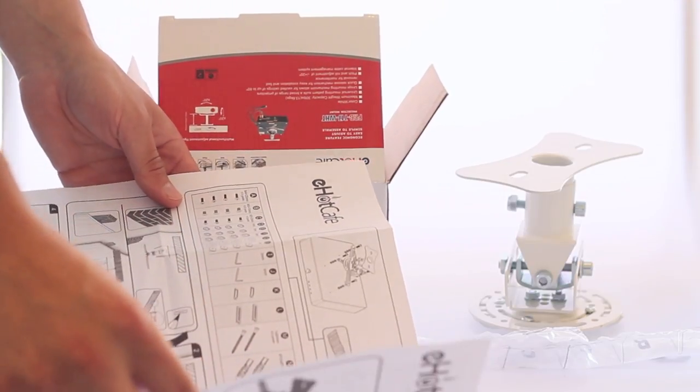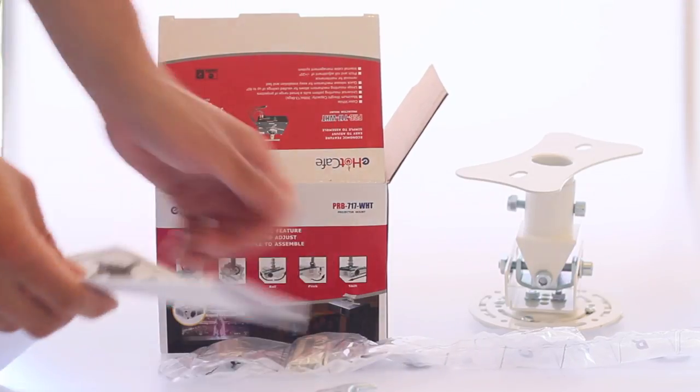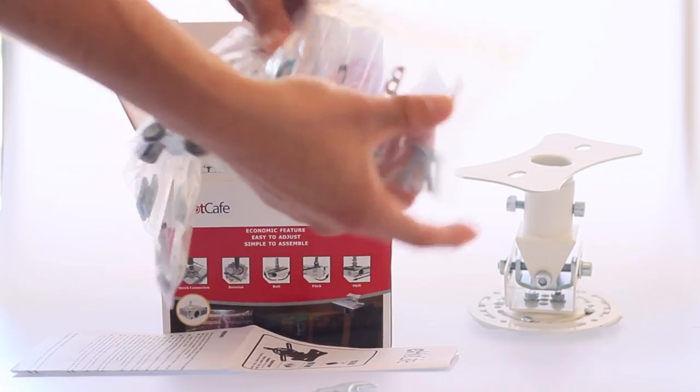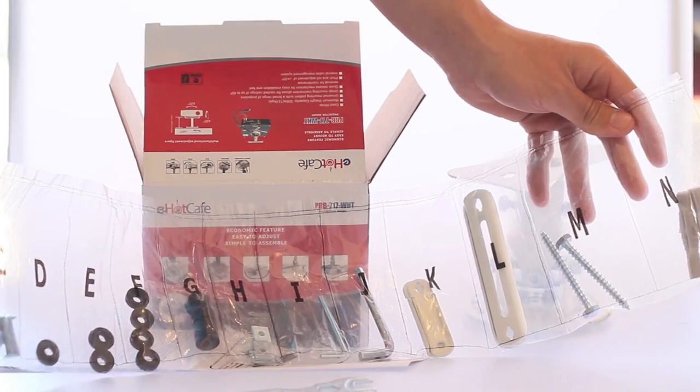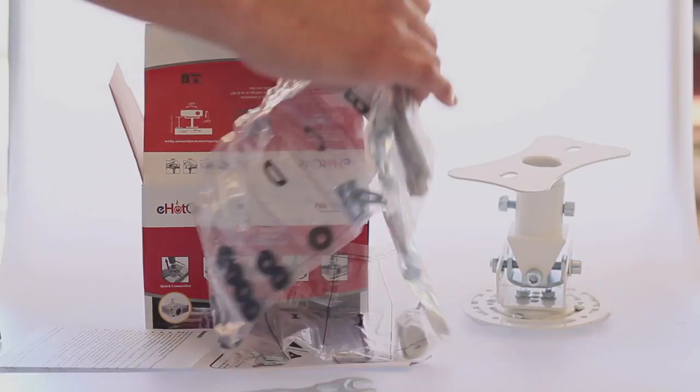There are the extenders, a couple more screws, and the wall mounts. They're all easily labeled A through N. In the instructions it says exactly which letter to use for each tool.